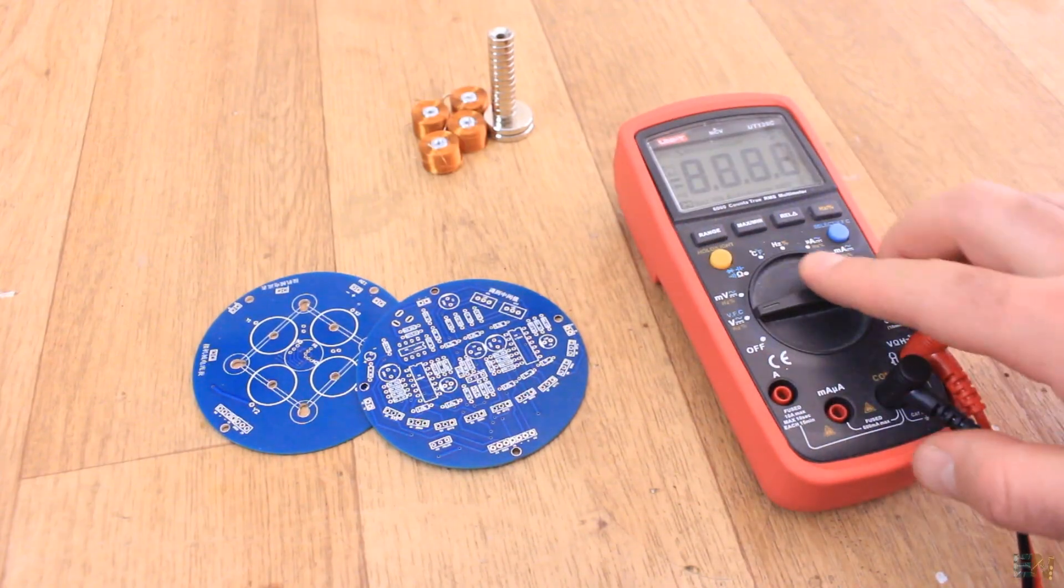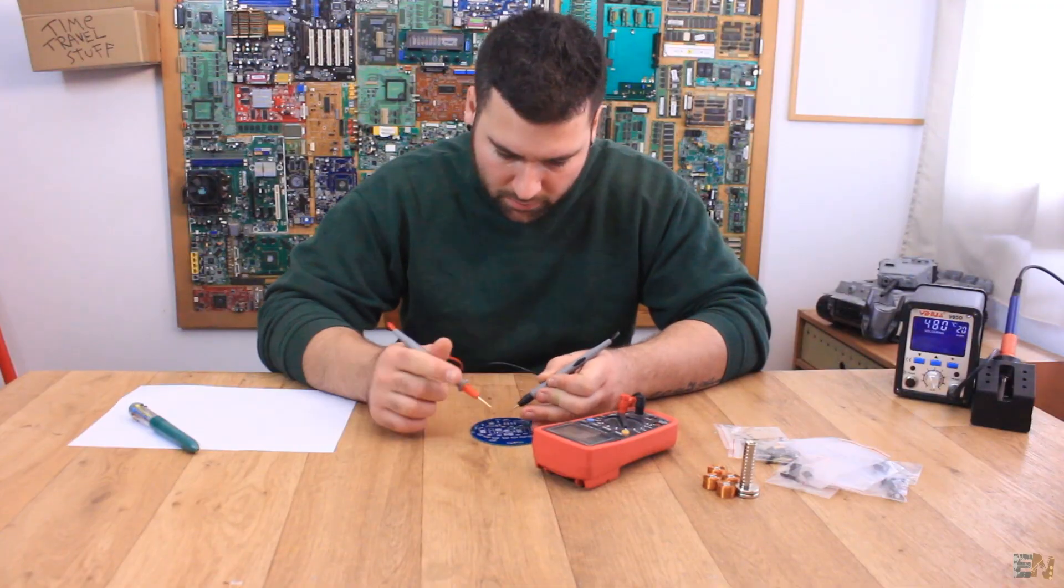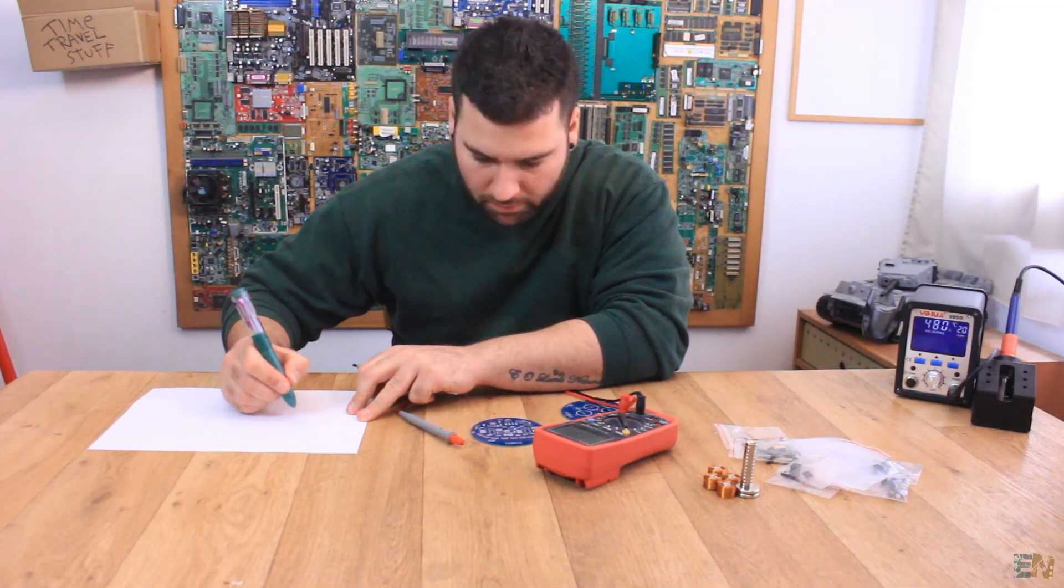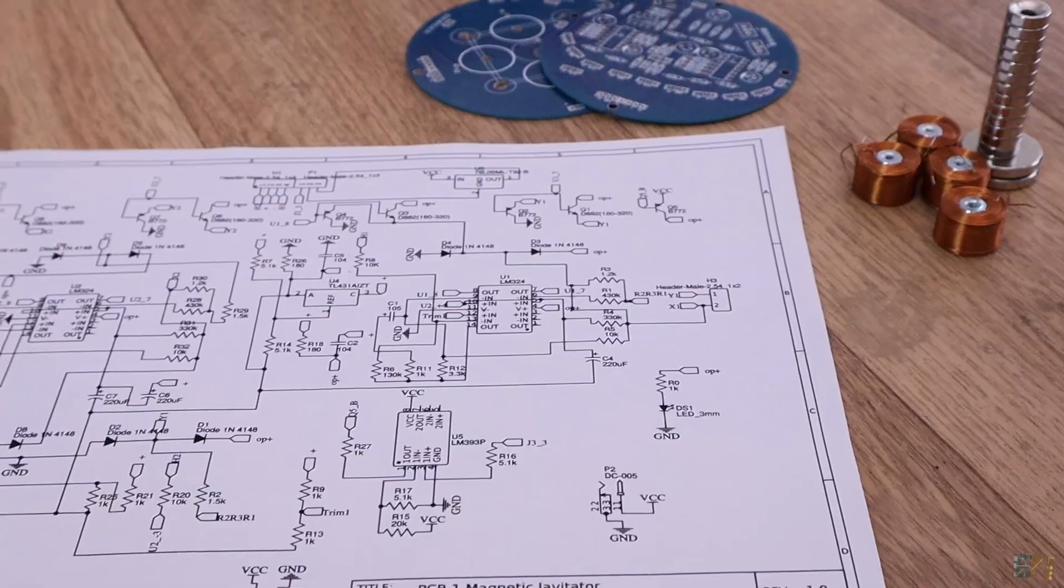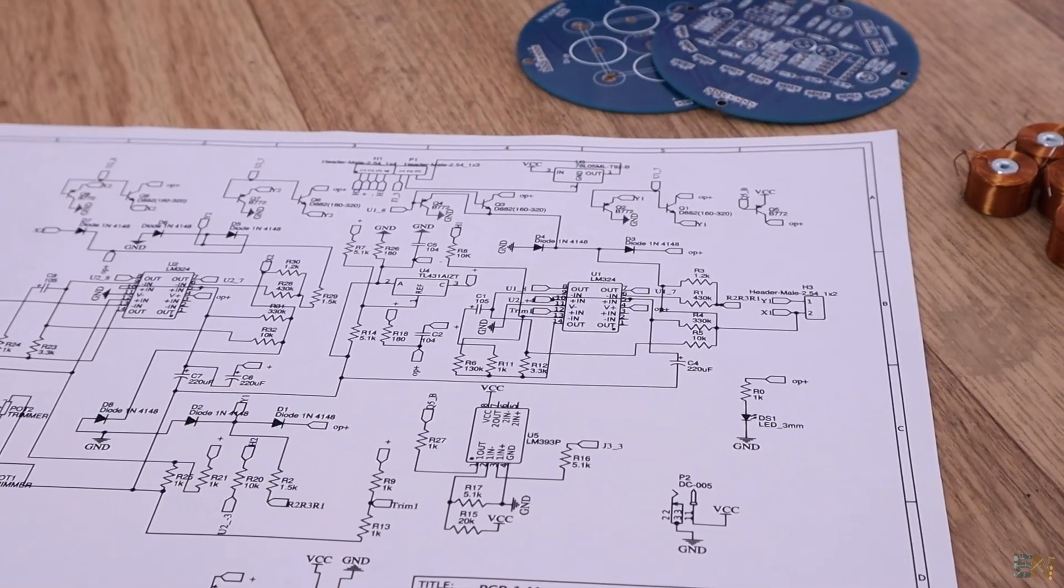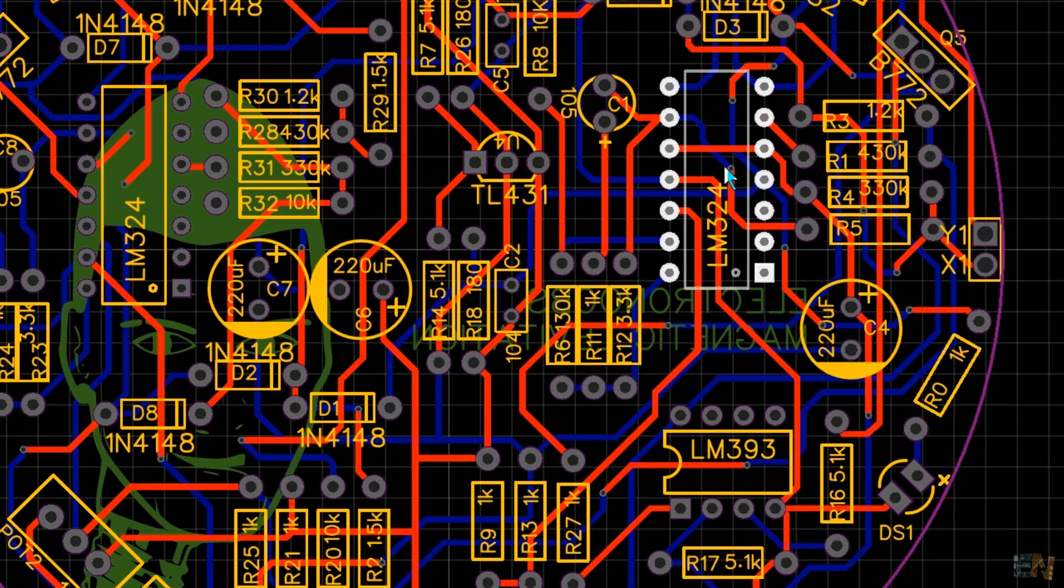Before I did that, I took my multimeter and after around 2 hours of testing connections and placing the board against the light to see the tracks, I was able to track all the connections and reverse engineer the schematic. Then I created this PCB in EasyEDA. You'll find the schematic and the gerbers for the board below this video.